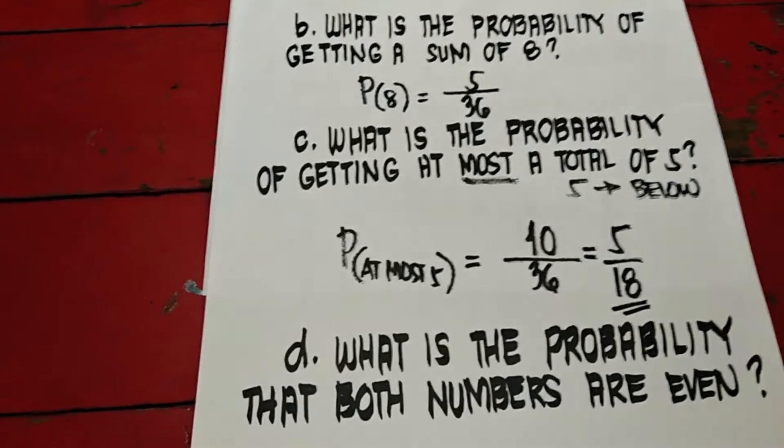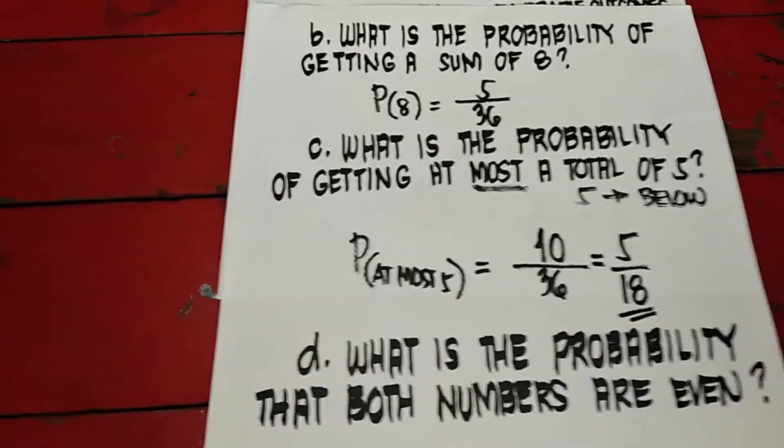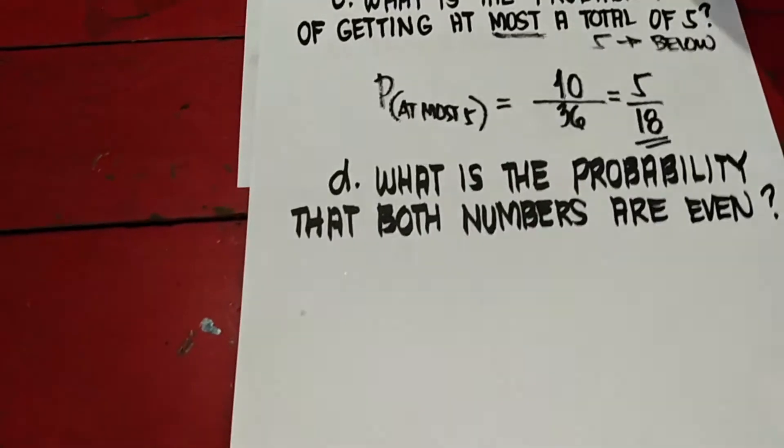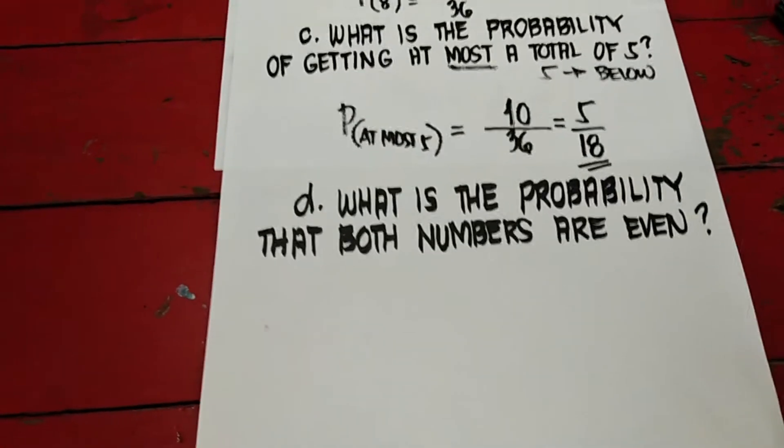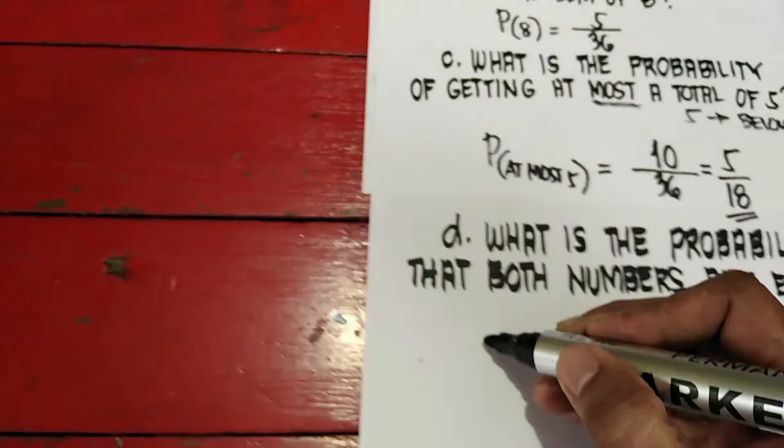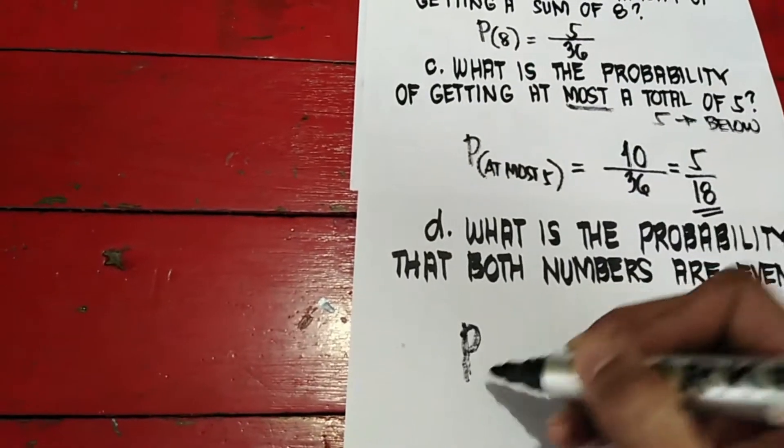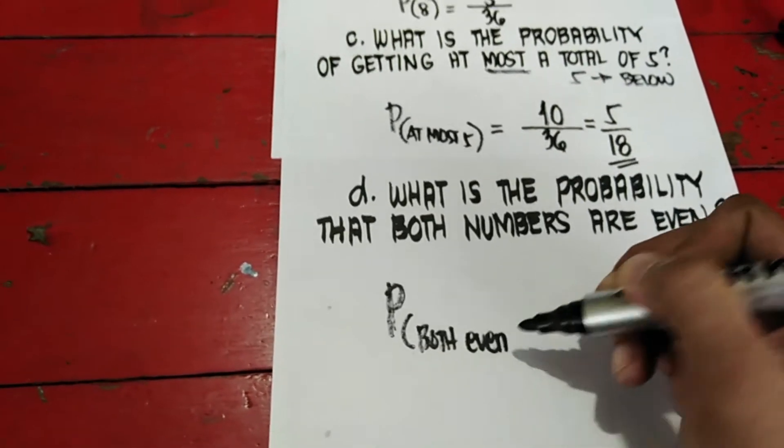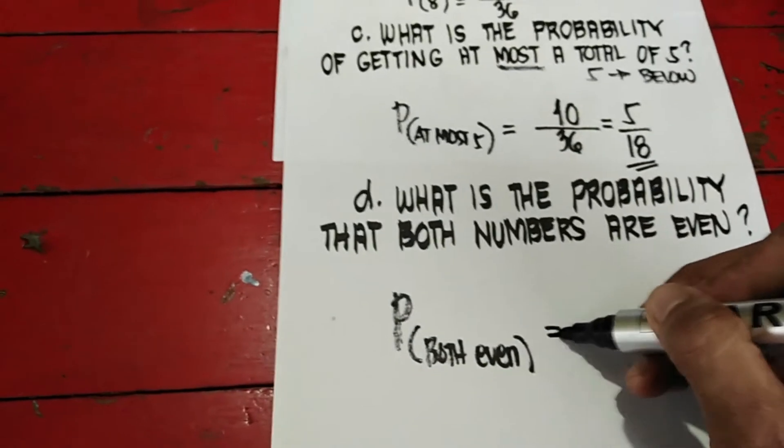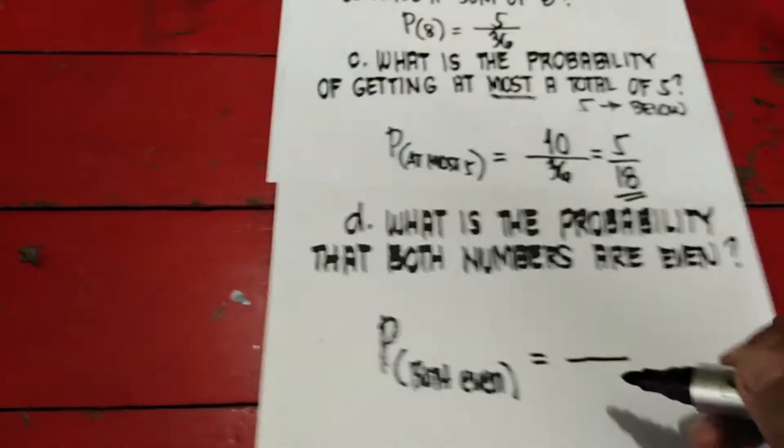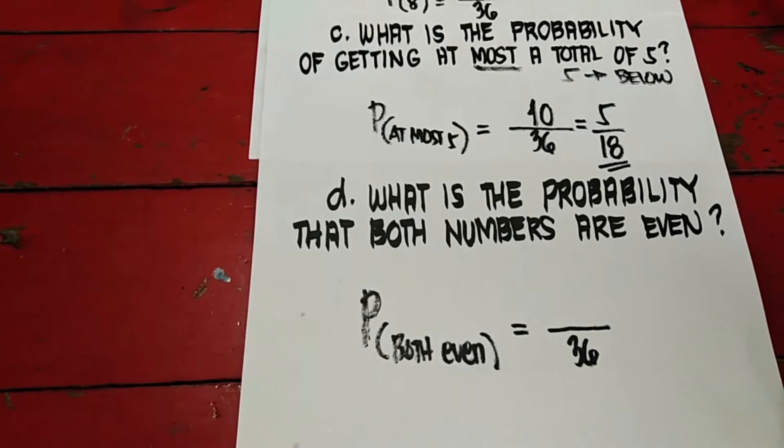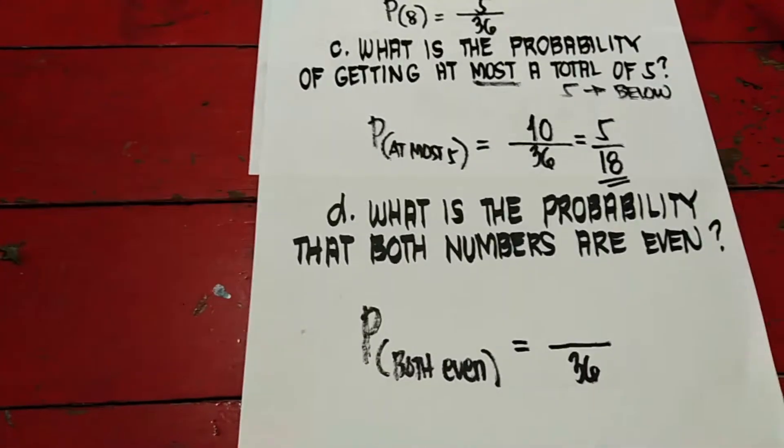Naintindihan ba natin? Magagamit nyo lahat ito. Hanggang sa college, kailangan ito, probability, statistics. What is the probability that both numbers are even? Ang natanong naman dito is the probability that both numbers are even. Gawa ka palagi ng fraction. Sa baba is the total, which is 36. Sa taas is the probability na even, yung dalawang lalabas ay even. Pupunta na naman tayo dun sa data natin.